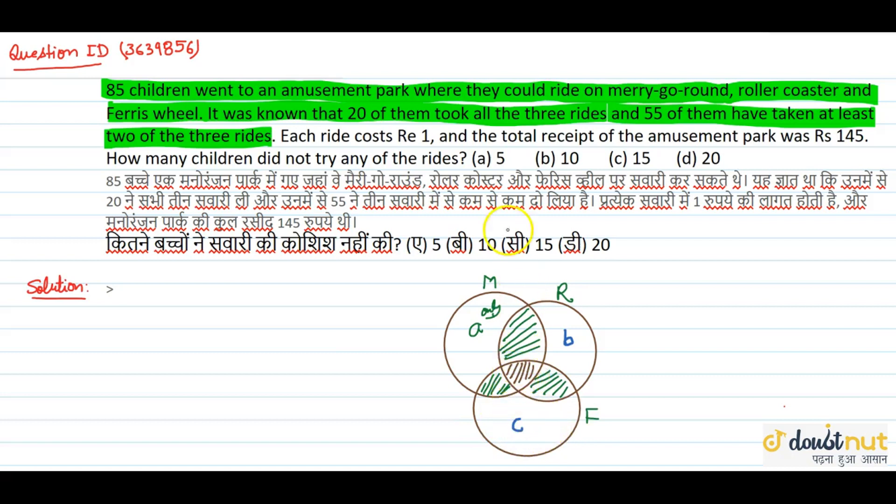Now, he said that 20 of them took all 3 rides. So this center part will be 20, who have all 3 rides. Now, 55 of them have taken at least 2 of the 3 rides.